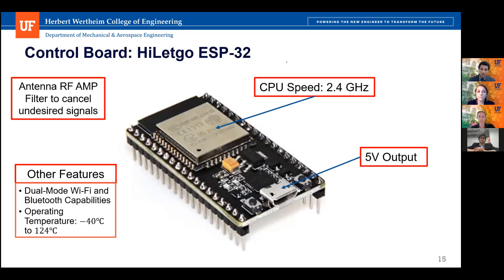The HiLetGo ESP32 microcontroller, a recommendation from Dr. Chesney, actuates both motors. It has a CPU speed of 2.4 GHz, built-in Wi-Fi and Bluetooth capabilities, and an antenna that can filter unwanted signals. It has a 5-volt output, and since both motors have drivers, the controller can correctly generate the proper inputs to both motors.